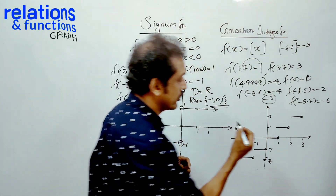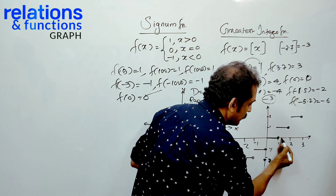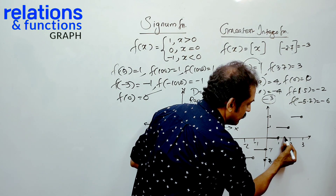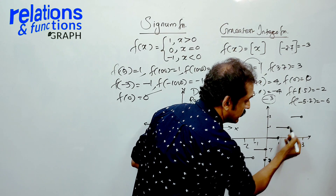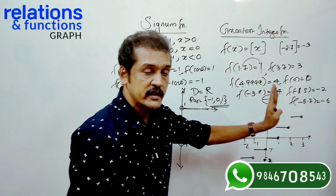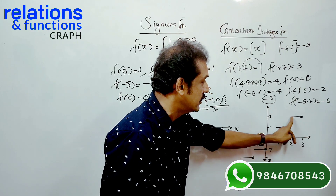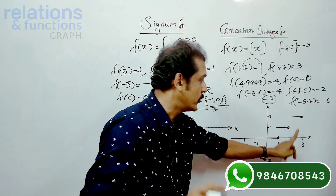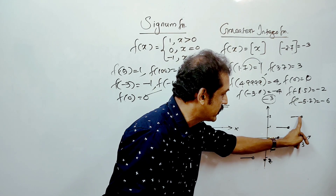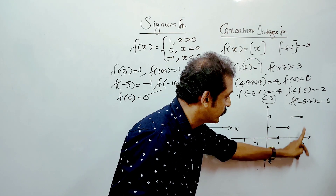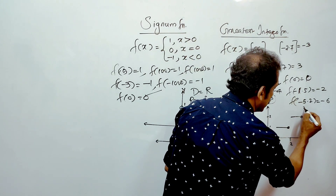This is called the step function. If x is between 1 and 2, the answer is 1. If x is between 1 and 2, the answer is 2. If x is between 2 and 3, the answer is 2. 2.5 is 2, 2.9 is 2, and 3 is 3.